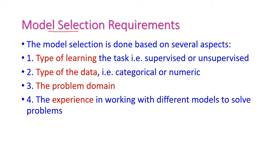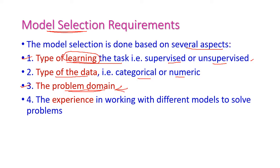First, let us see the requirements for selecting a model. There are four important aspects. The first is the type of learning task — whether it is supervised, unsupervised, or reinforcement learning. The second is the type of data, whether categorical or numerical. The third is the problem domain. And the fourth, most important one, is experience — based on previous experience we can select our model.